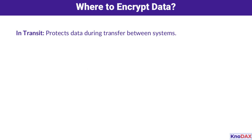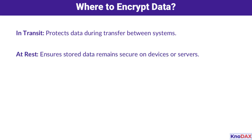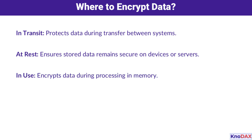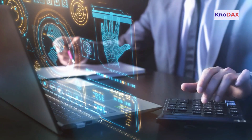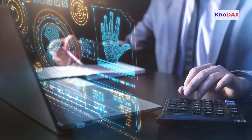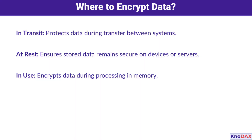First, we have data in transit — data being transferred, like files sent over the internet. Encrypting it protects against interception. Next is data at rest, which refers to stored data, such as files on a server or device. And finally, there's data in use — data actively being processed. Each of these areas requires specific tools and methods.